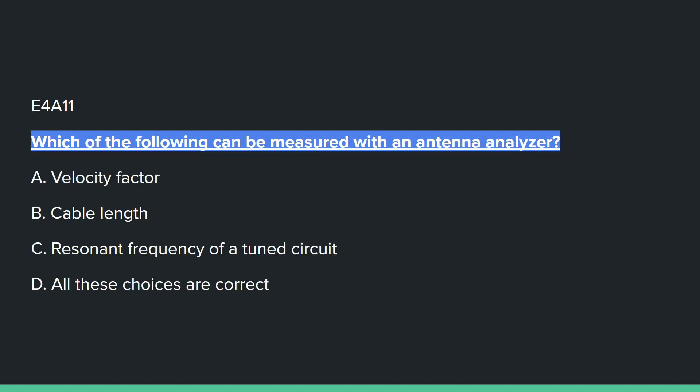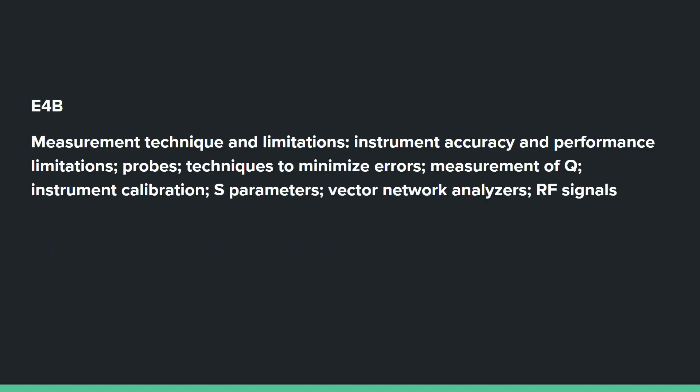E4A11: Which of the following can be measured with an antenna analyzer? Answer D: all of these choices are correct — velocity factor, cable length, and resonant frequency of a tuned circuit.